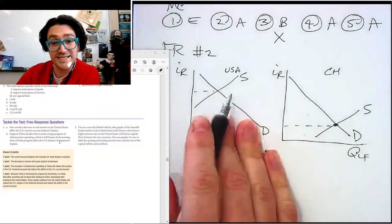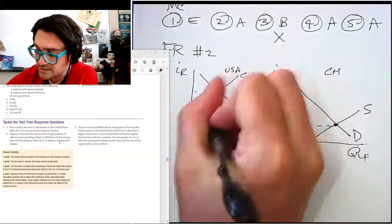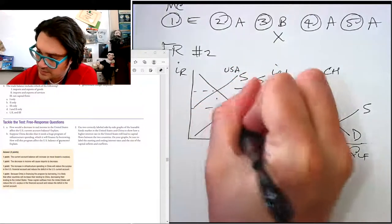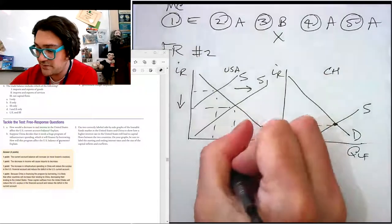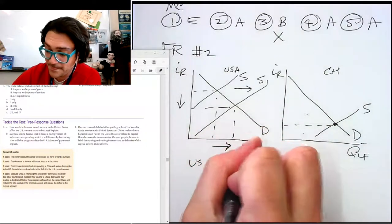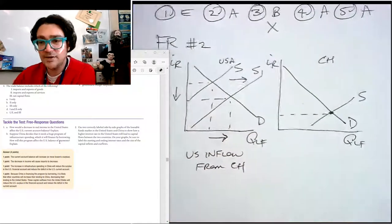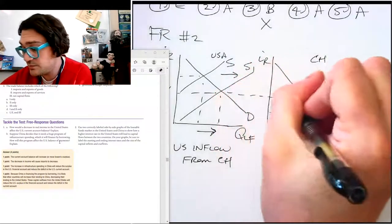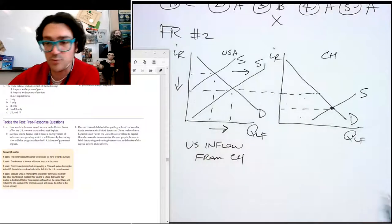So the Chinese investors are going to move their money into the United States, which is increasing the supply of loanable funds there. Quantity and pushes the interest rate down. So we've kind of shown that one. And so we'd say US gets an inflow from China. And on this side, we need to decrease it.